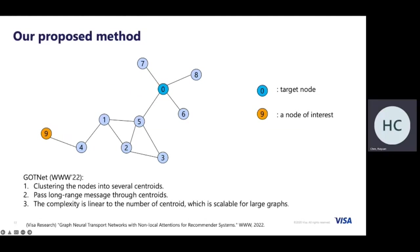Here is our proposed method. In the graph, we try to capture the long-range message between node 0 and node 9. In the first step, we cluster all nodes into several centroids. Instead of passing messages directly from node 9 through intermediate nodes to node 0, we pass the long-range message through the centroid. As such, the complexity is linear to the number of centroids, which is scalable to large graphs.